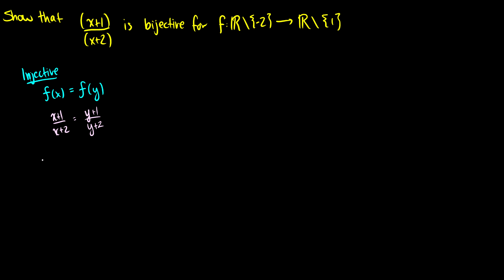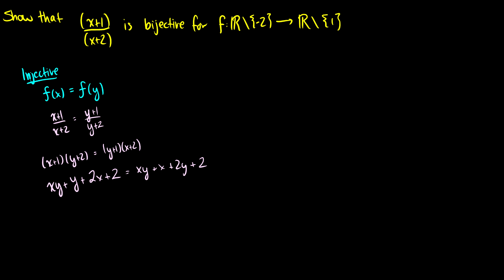We cross multiply to get (x + 1)(y + 2) = (y + 1)(x + 2). Expanding: xy + y + 2x + 2 = xy + x + 2y + 2. Subtracting xy and 2 from both sides leaves y + 2x = x + 2y. Bringing all x's to the left and y's to the right gives x = y. So the function is injective.